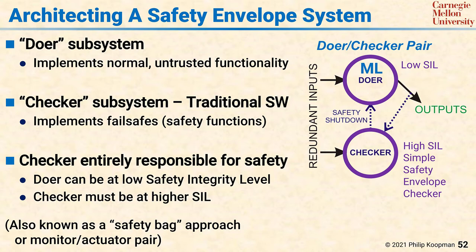The checker's job is not to duplicate the doer's functionality, but simply to police the safety envelope boundary and detect when it's been crossed. This means the doer can be at a low safety integrity level while the checker can be entirely responsible for safety, operating at a high safety integrity level. This classic pattern has also been known as a safety bag approach or a monitor-actuator pair — all basically the same idea of having a high SIL checker policing the behavior of a low SIL doer.